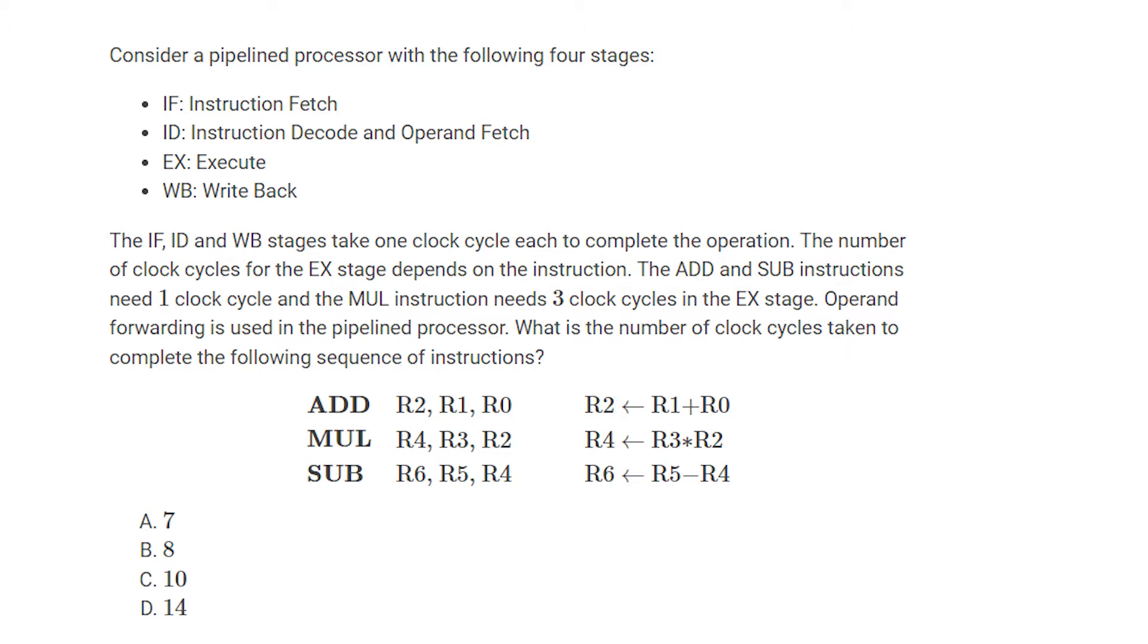IF, ID, EX, WB stages take one clock cycle each to complete the operation. The number of clock cycles for the EX stage depends on instruction. The add and sub instructions need one clock cycle and the multiply instruction needs three clock cycles in execute stage.